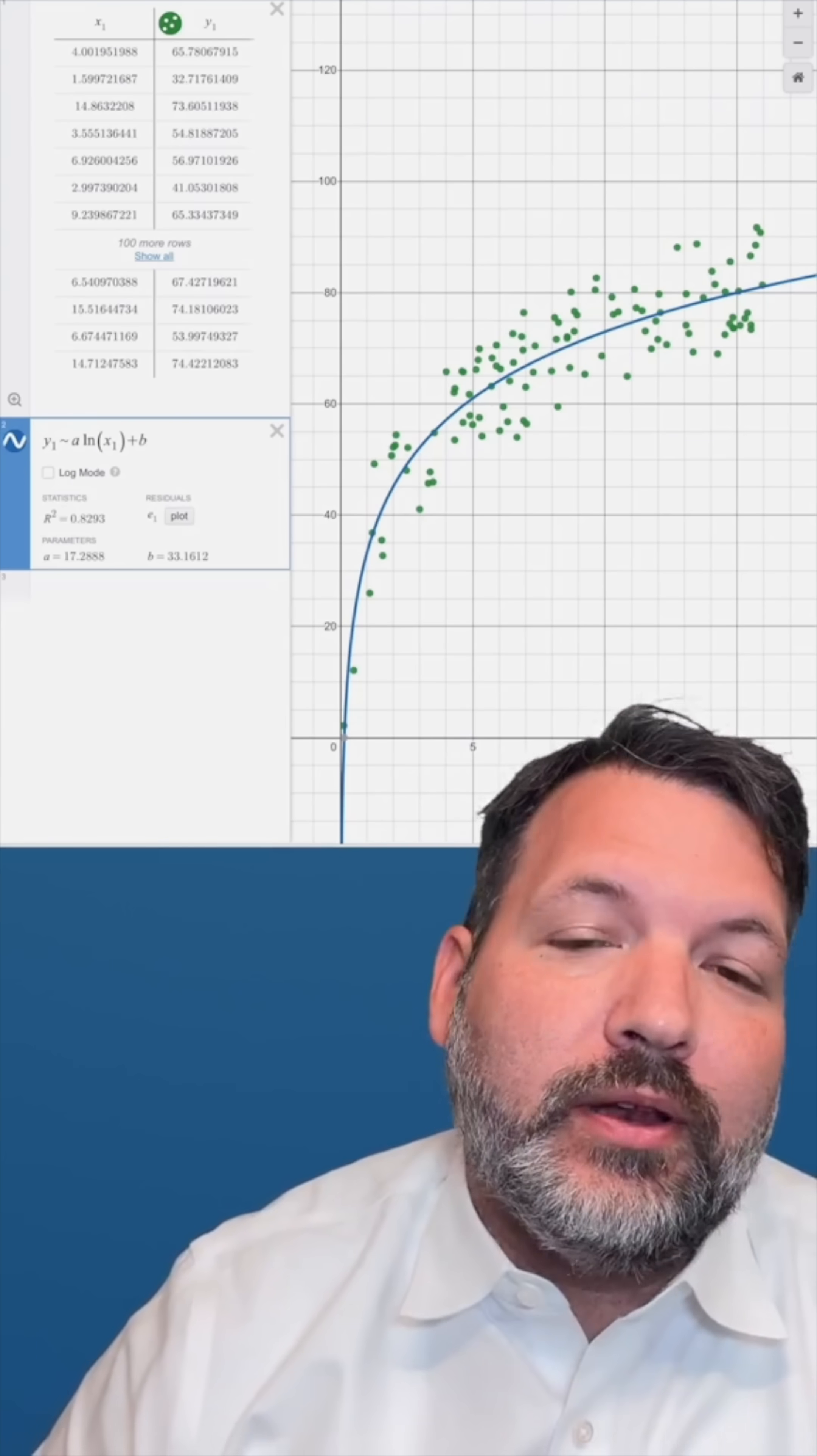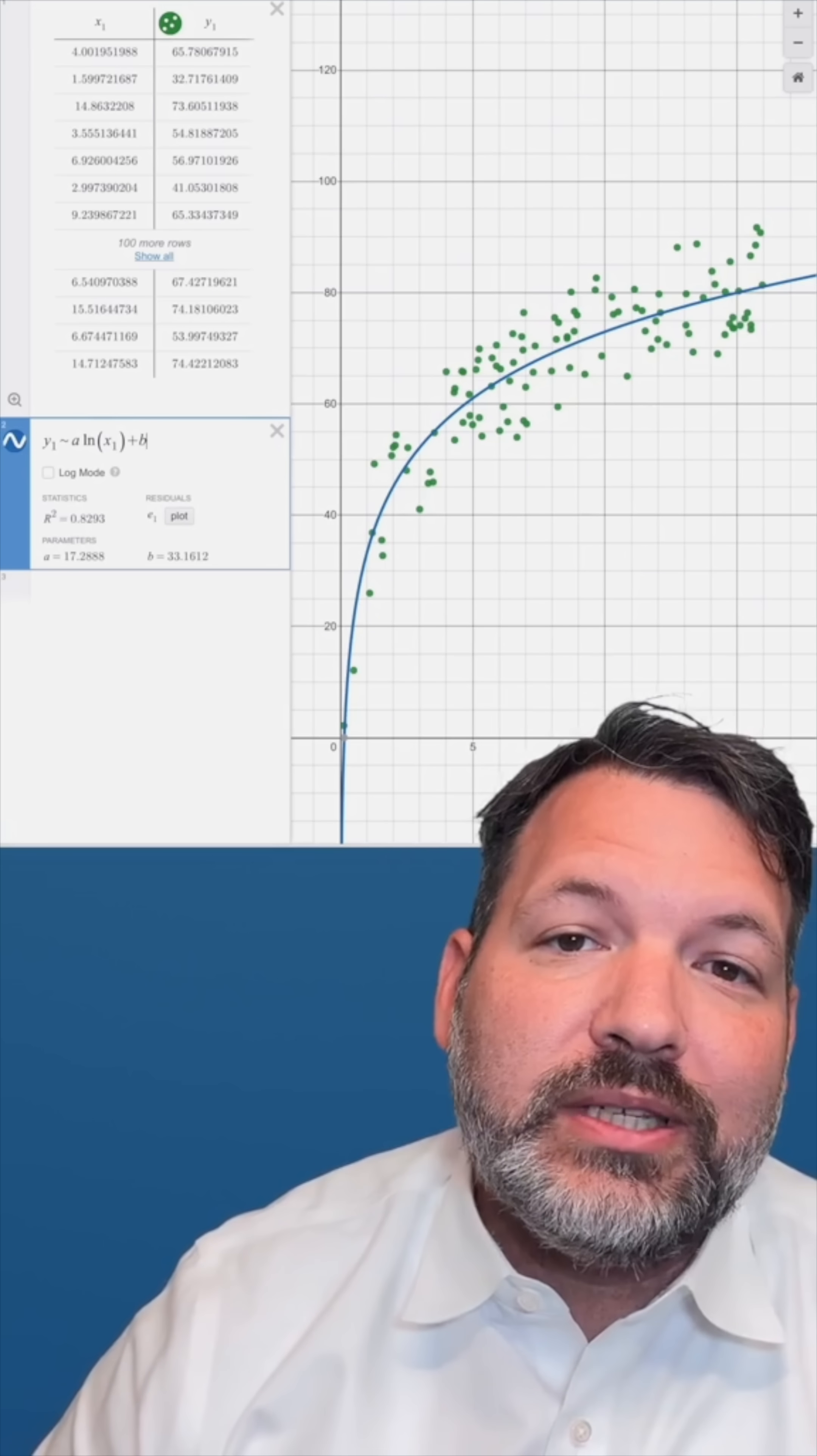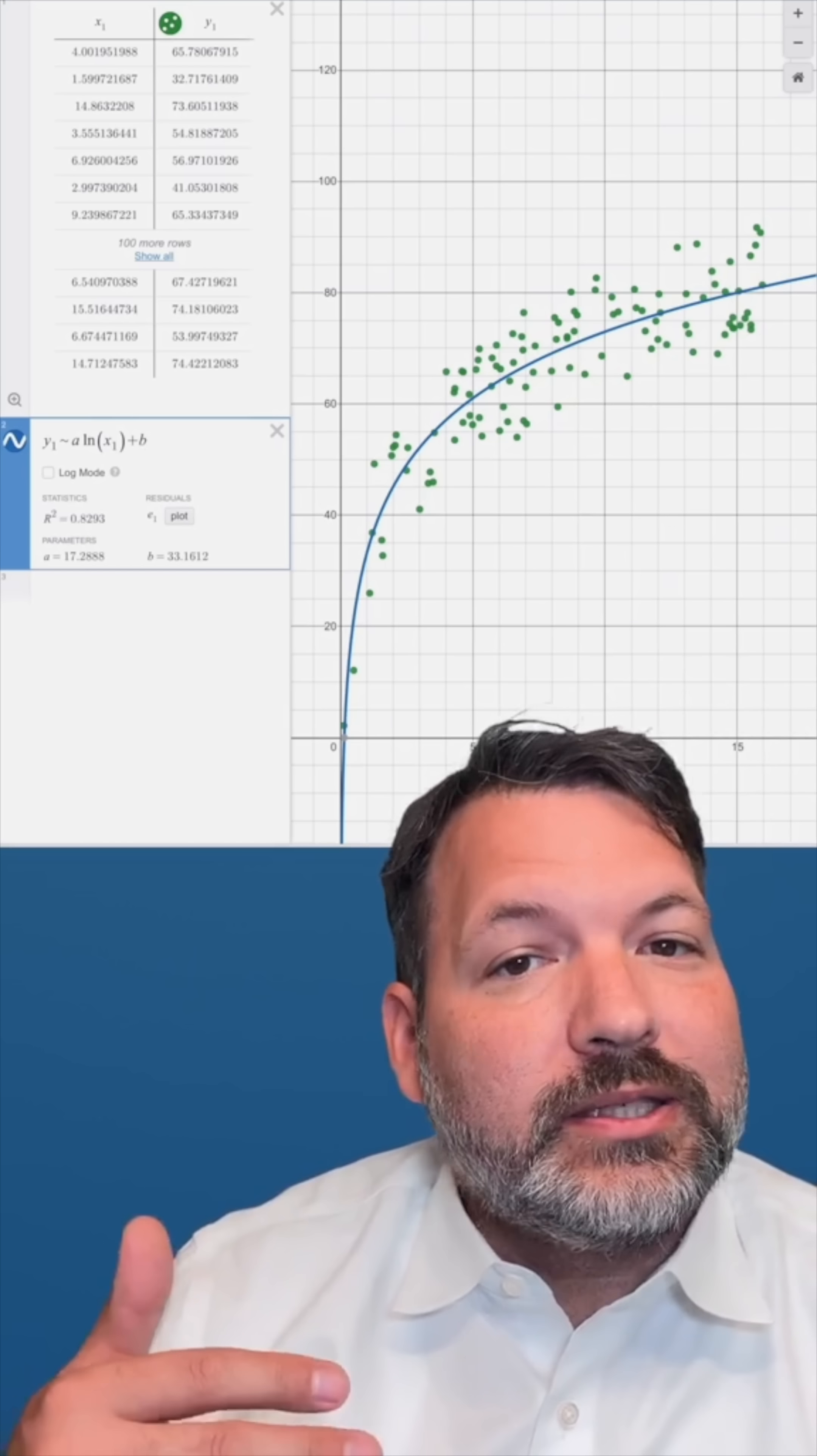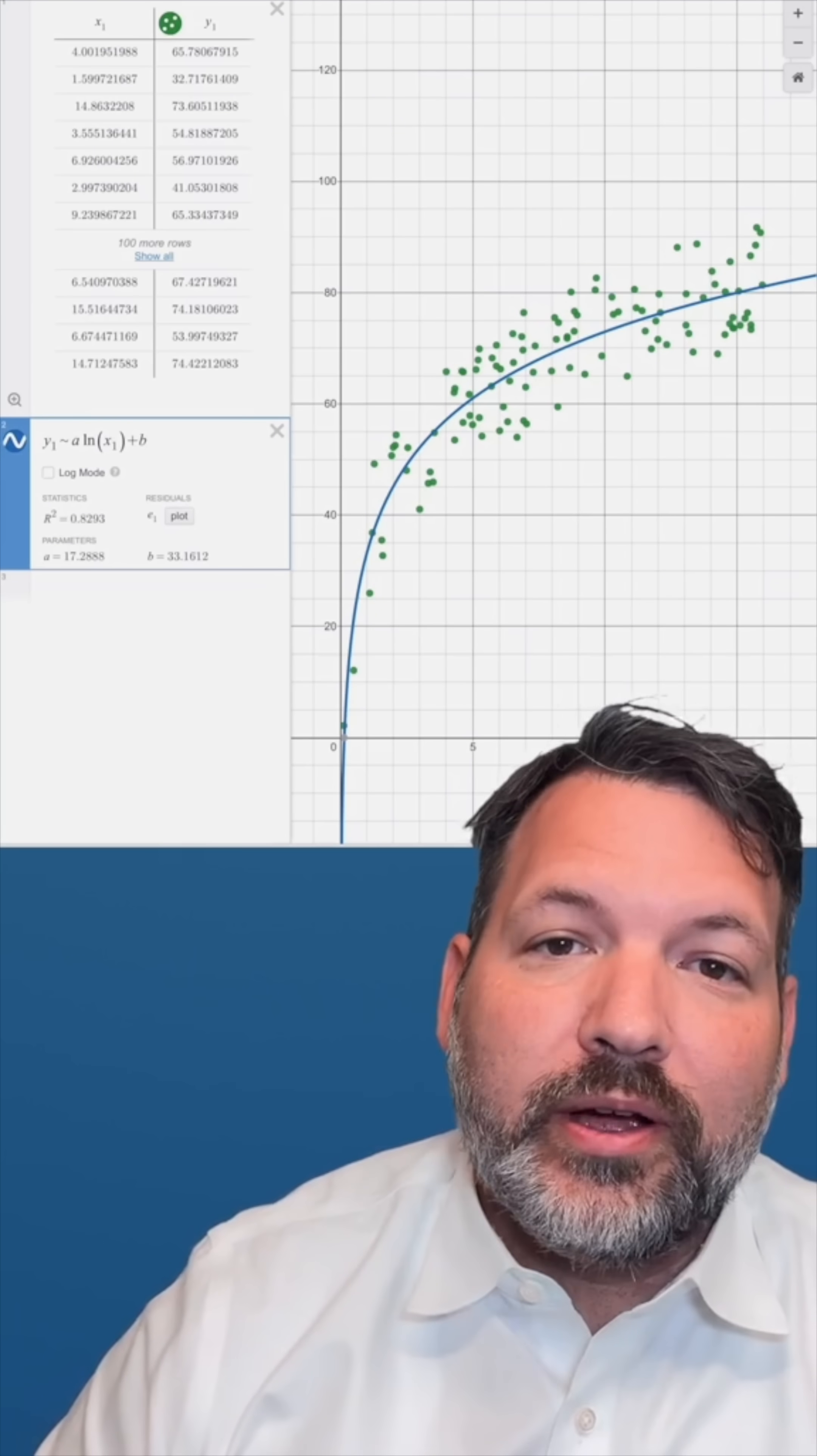A nine-year-old dog, on the other hand, the natural logarithm of nine is just a little bit bigger than two. Two times 17 is 34. 34 plus 33 is 67. So your nine-year-old dog is like a 67-year-old man or woman, retired, ready to enjoy their finer days.